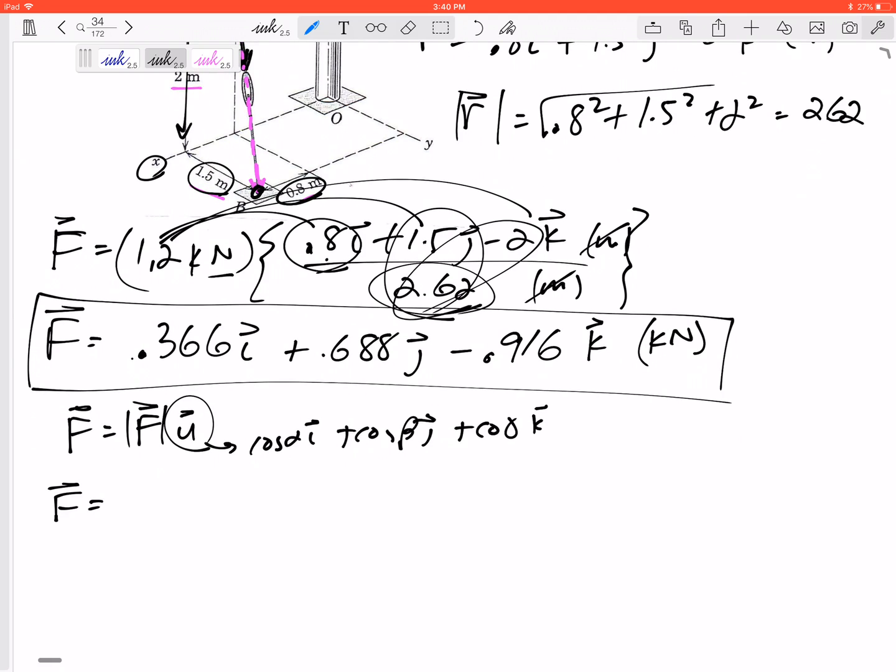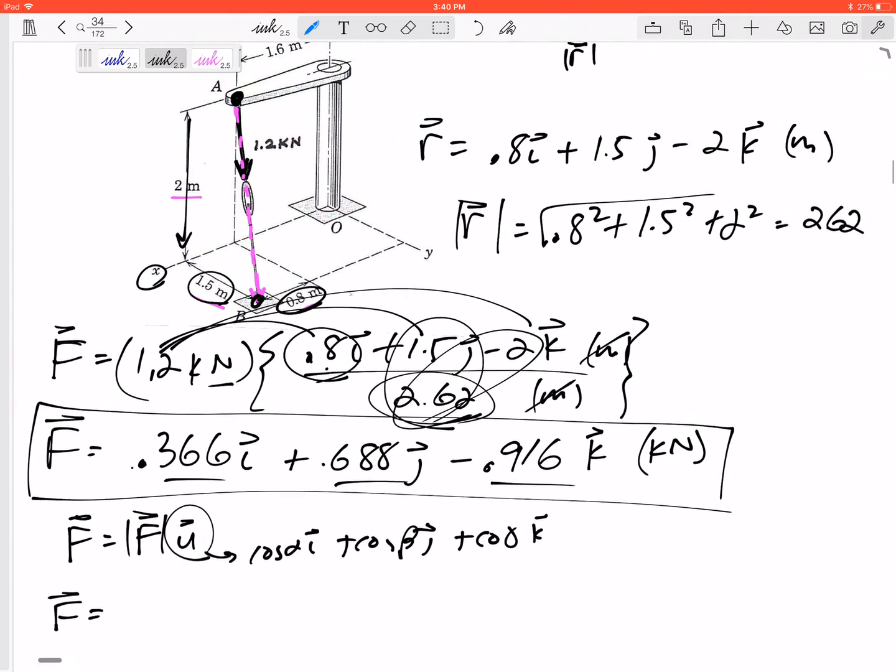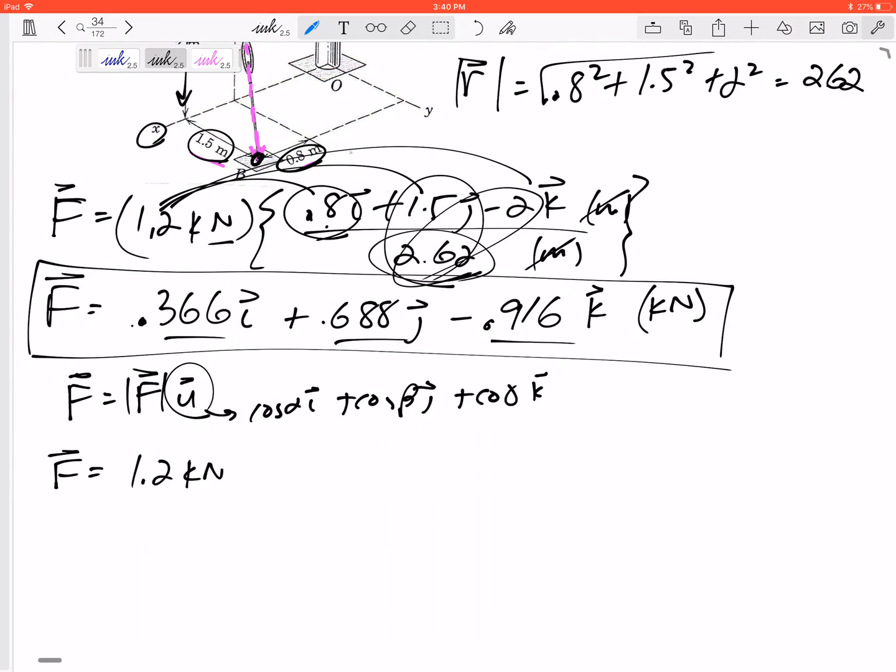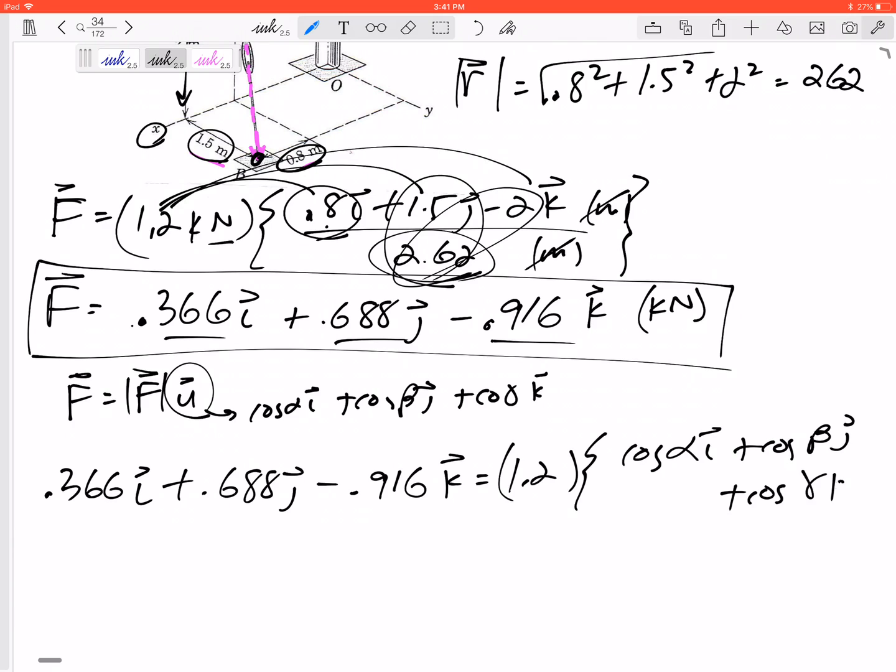So here F equals—now I could redo this magnitude but I haven't added anything or subtracted anything, so that should still be 1.2 kilonewtons. Let me redo this. I know this already in component form: 0.366 in the i plus 0.688 in the j minus 0.916 in the k. I know the magnitude is still 1.2, but I don't know this cosine alpha i plus cosine beta j plus cosine gamma k.